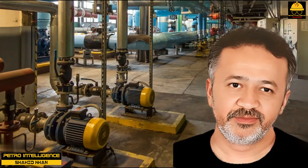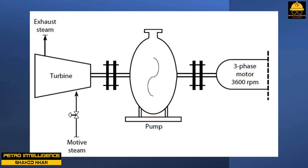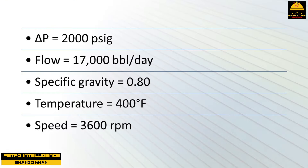This picture is a sketch of a centrifugal pump driven by a three-phase motor with a turbine helper. This particular pump was charging a light gas oil stream to a high-pressure hydrocracker. The pump was operating quite close to its design conditions: delta P equals 2000 psig, flow equals 17,000 barrels per day, specific gravity equals 0.80, temperature equals 400°F, speed equals 3600 RPM.